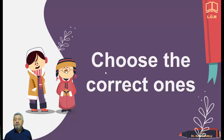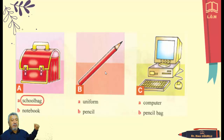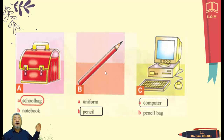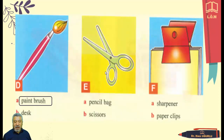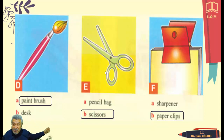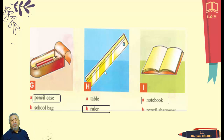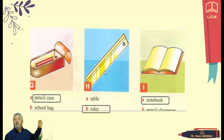My friends, it is now the time to choose the correct ones. We have got three pictures — we are choosing the correct one. Look at the picture and say what is this? First picture: school bag. Second picture: pencil. The other one: computer. And the next set — first picture: paint brush. The second one: scissors. And the other one: paper clips. And again — first picture: pencil case, ruler, notebook. Repeat please: pencil case, ruler, notebook.